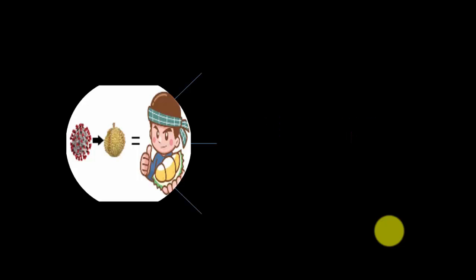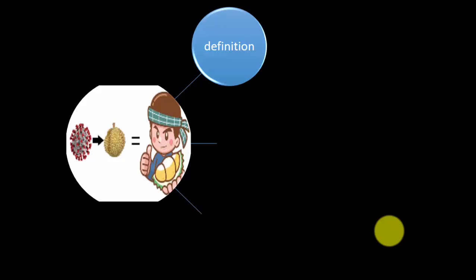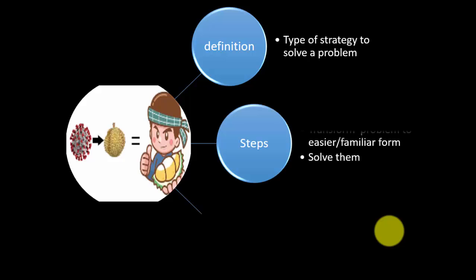So what is a Transform and Conquer? The definition of Transform and Conquer basically is just another approach or strategy to solve a problem. There are basically two steps using this approach. The first one is to transform the problem into an easier or familiar form.